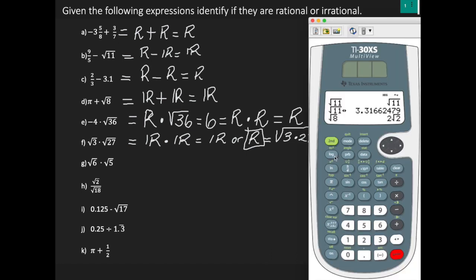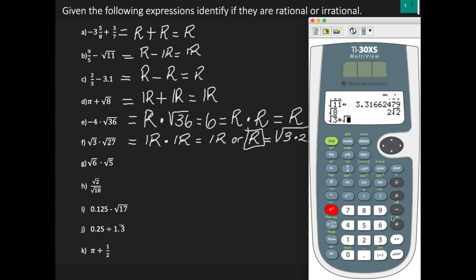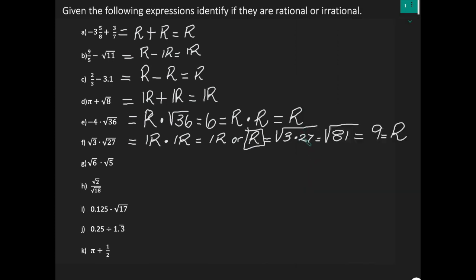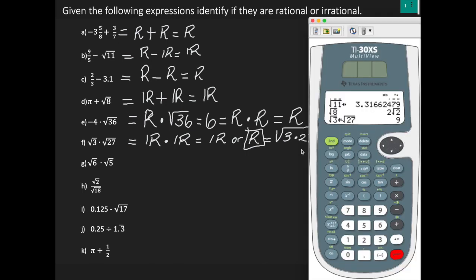If you want to use the calculator: press second function, x squared, enter 3, go to the right, multiply, then second function, x squared, enter 27, go to the right, and hit enter. The calculator spits out 9. There is no radical sign shown — just the integer 9, which is rational. I showed you how to do it manually and how to input it in the calculator, and both answers were 9.